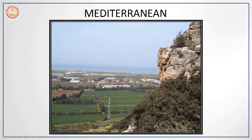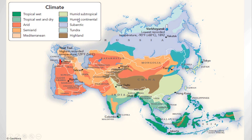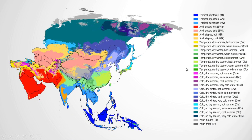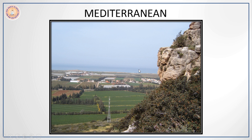Next we come to the Mediterranean regions. Asia has got a very small area which has a Mediterranean type of climate. It is found in areas close to the Mediterranean Sea and Black Sea, especially in parts of Israel, Lebanon, parts of northern Syria, and part of eastern Turkey. You can see this part is having a Mediterranean type of climate.